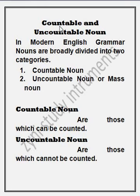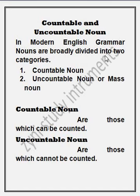Besides these kinds, noun کی کچھ اور بھی kinds ہیں — countable noun and uncountable noun. In modern English grammar, nouns are broadly divided into two categories: first, countable noun; second, uncountable noun. Uncountable noun کو mass noun بھی کہتے ہیں.